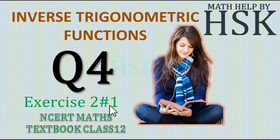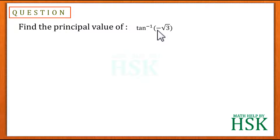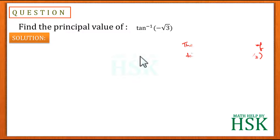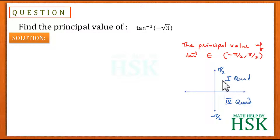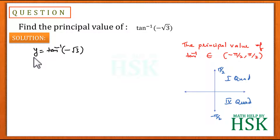Taking question number four of exercise 2.1, we have to find the principal value of tan inverse of minus root 3. To solve this, we should know that the principal value of the tan inverse function belongs to the open interval minus pi by 2 to pi by 2, meaning we calculate the principal value in the first quadrant or the fourth quadrant. We assume the principal value y equals tan inverse of minus root 3.